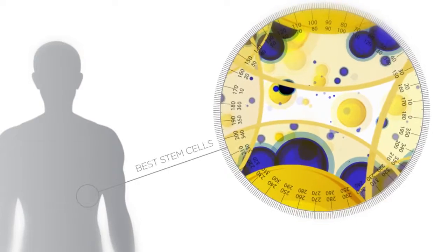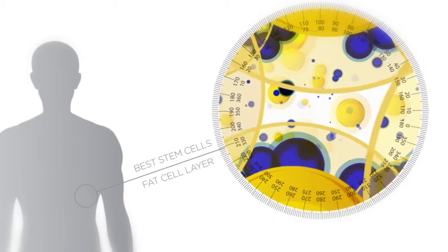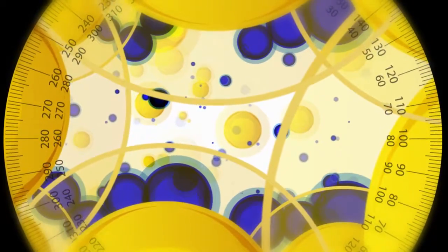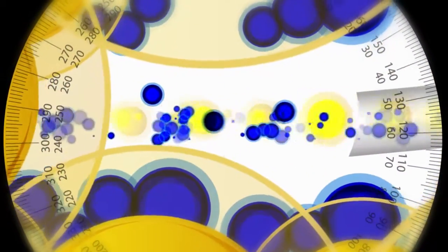The process begins with the search for the best stem cells in the human body. The stem cells are found within the body's fat layer. By using a sterile and specialized syringe, doctors extract a mixture of fatty tissue and a group of healthy stem cells.